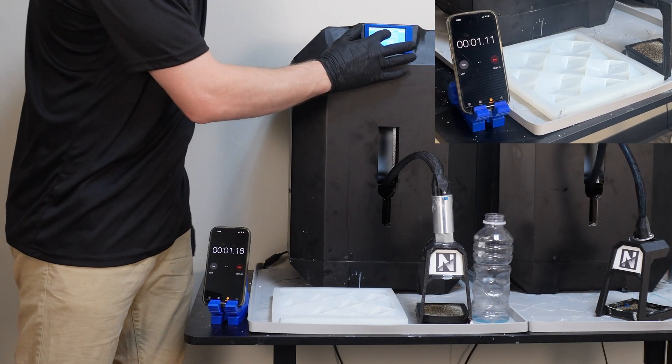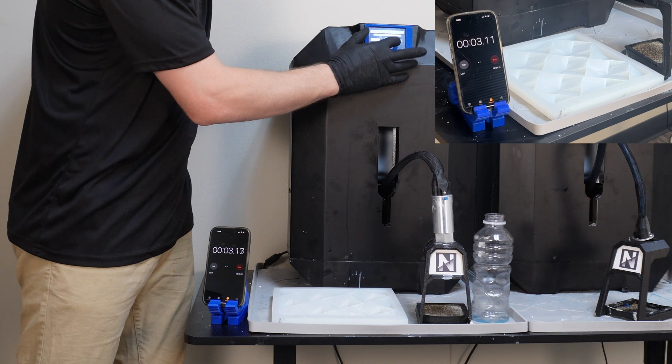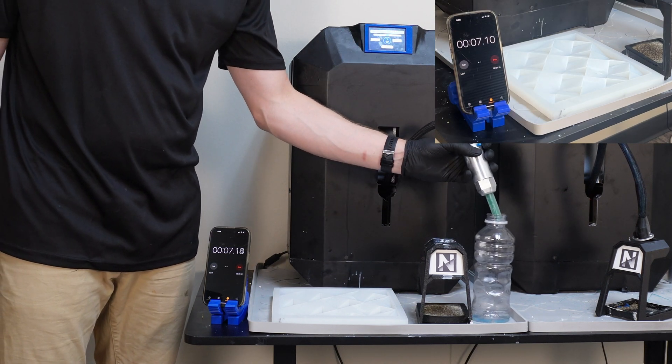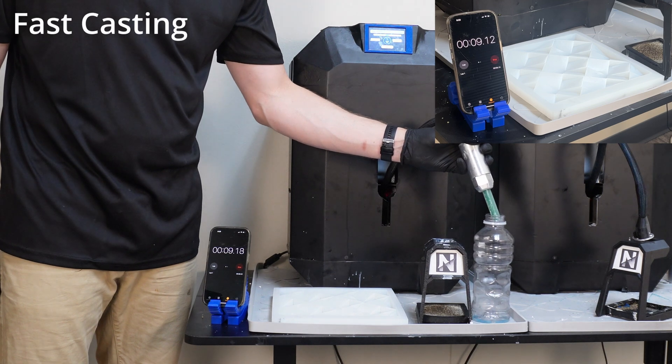Now, I'm going to blow your mind. Polyurethanes are thermoset resins, so they like heat. I've heated up the mold to 100 degrees Celsius to accelerate the cure time. This is called fast casting.